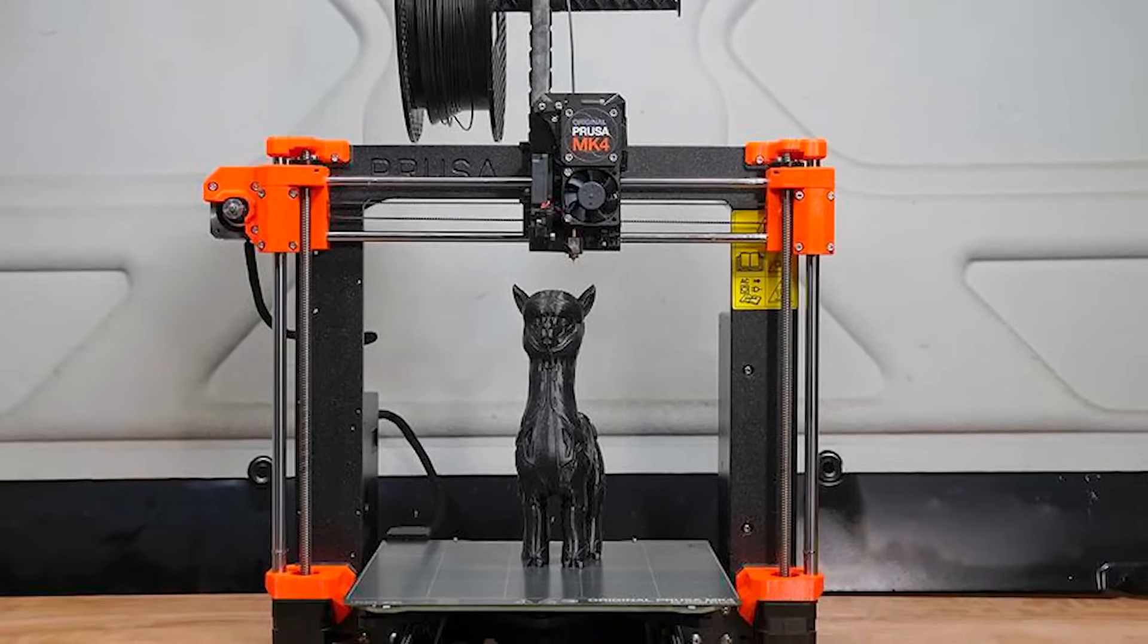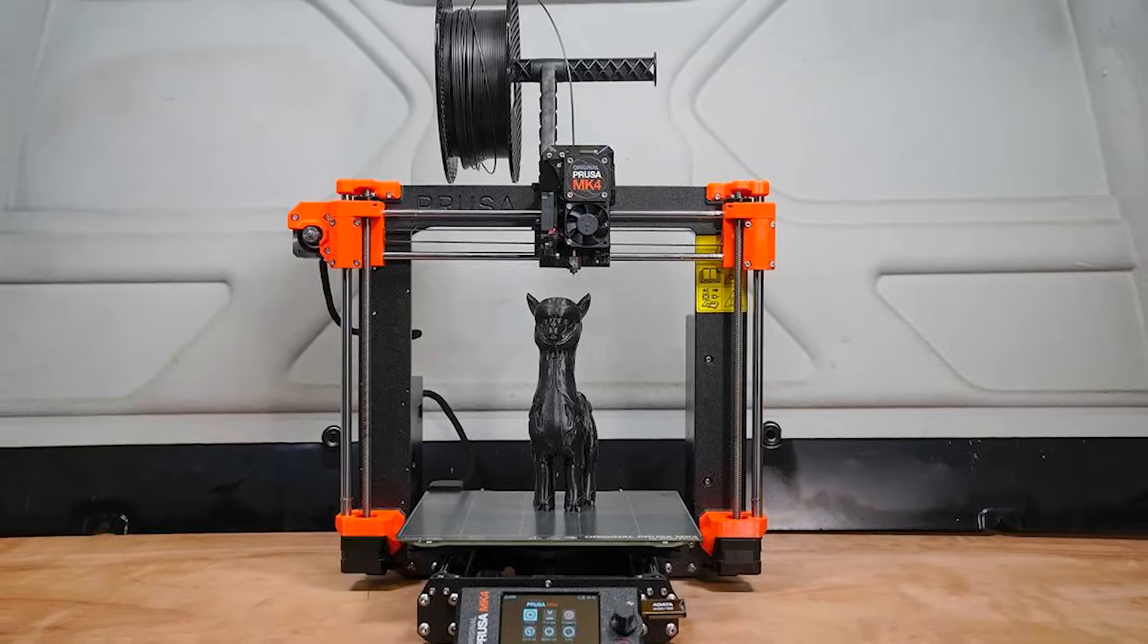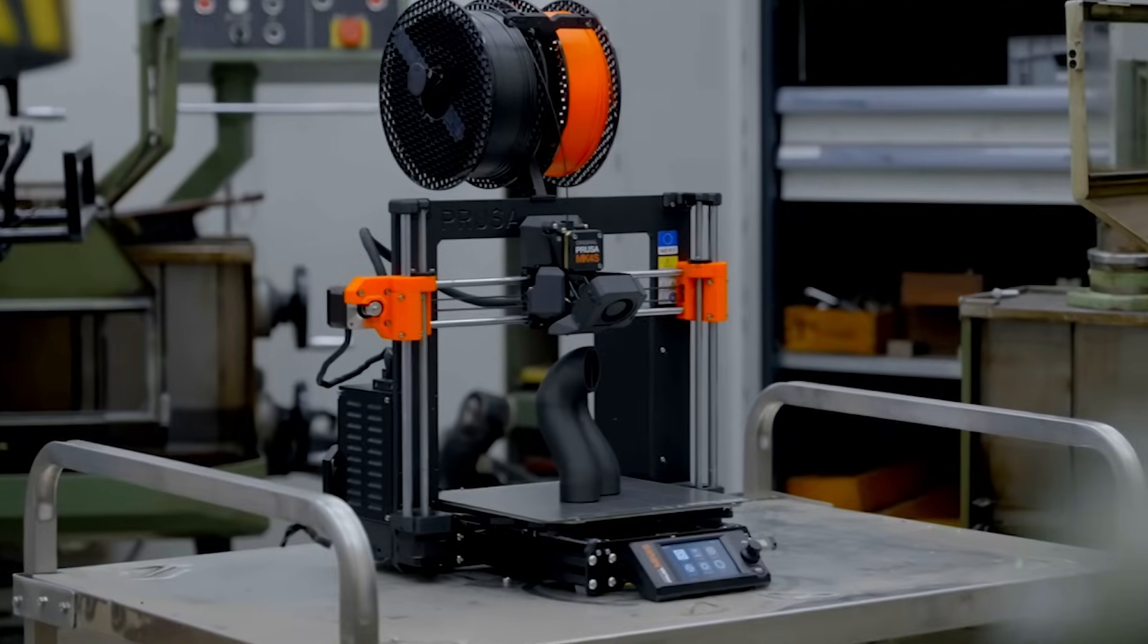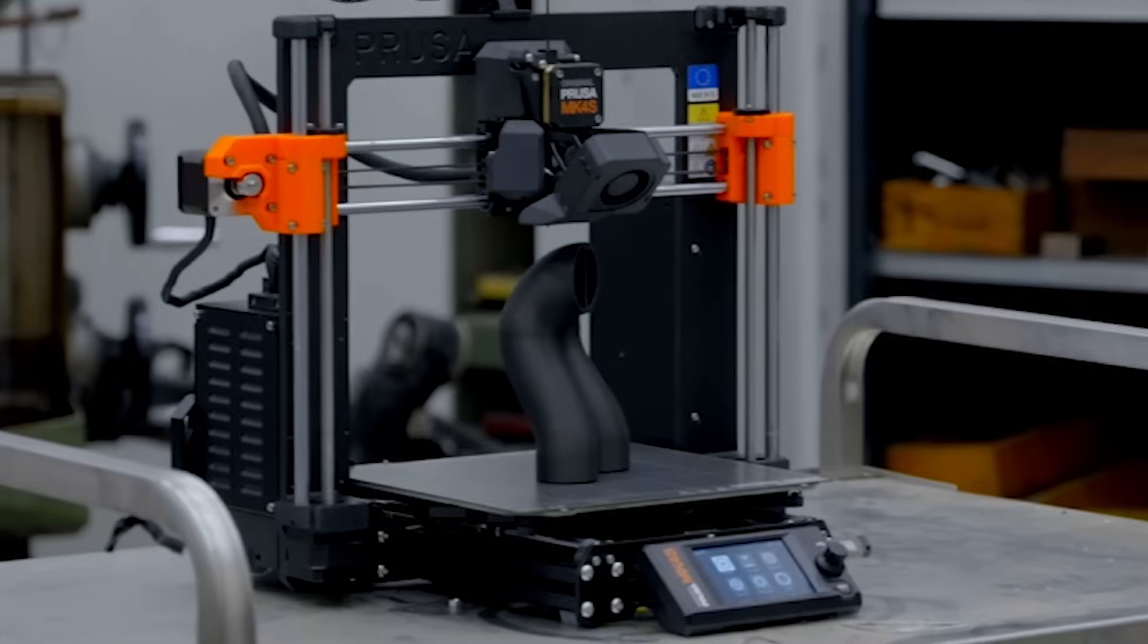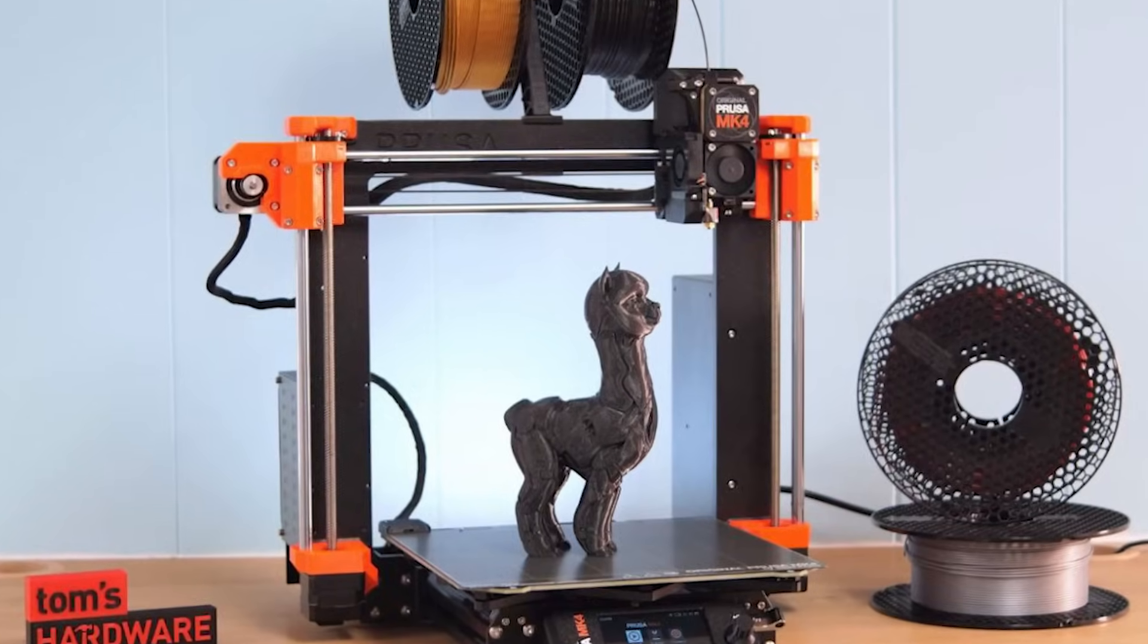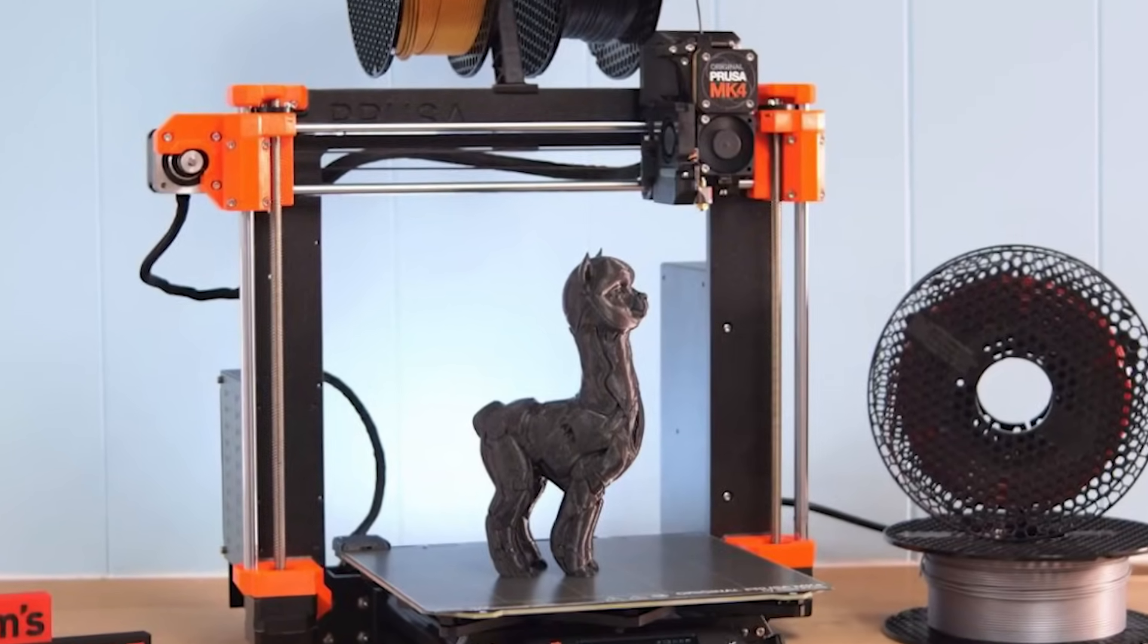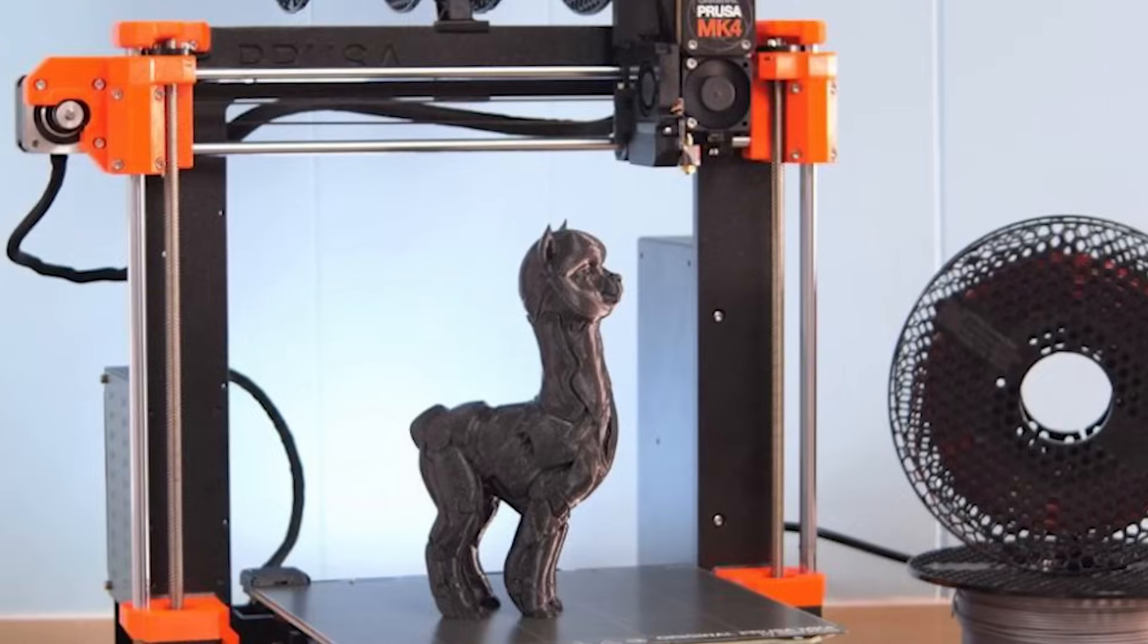The printer supports a wide range of materials, including PLA, PETG, ABS, ASA, and TPU, making it versatile for various applications, from prototyping to functional parts. If you're looking for a low-maintenance, high-precision 3D printer that consistently delivers excellent results, the Prusa MK4 is a premium option that won't disappoint.